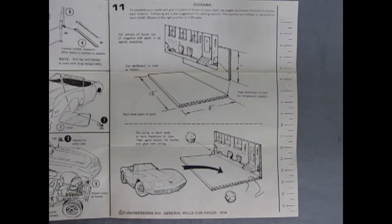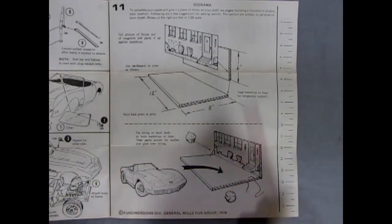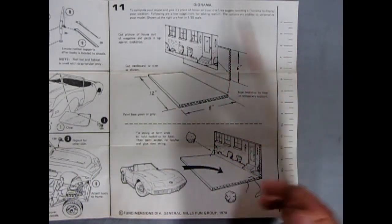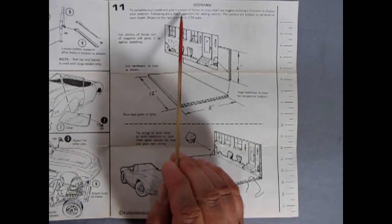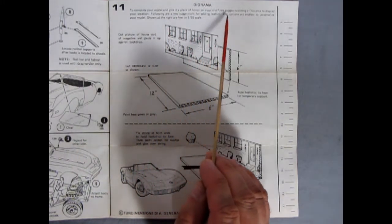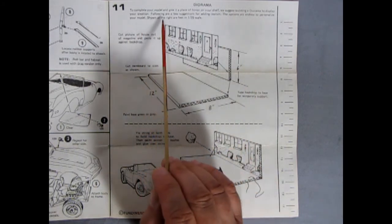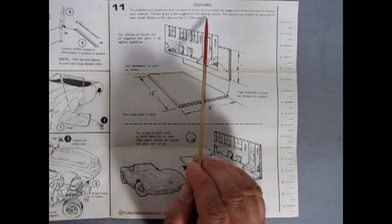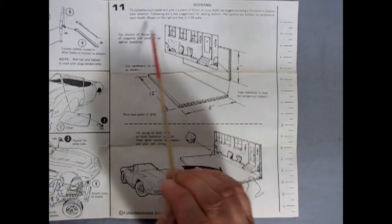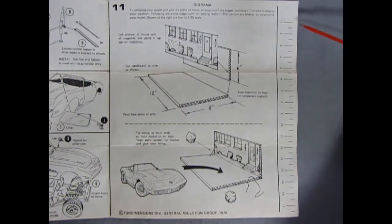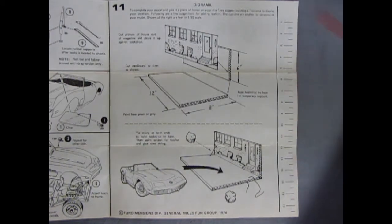And as our bonus treat of the week for 1974, we have this really groovy diorama idea. Now unfortunately we don't get these pieces in the kit however it does say to complete your model and give it a place of honor on your shelf we suggest building a diorama to display your creation. Following are a few suggestions for adding realism. The options are endless to personalize your model. Shown at the right are feet and 1 25th scale down here this ruler.